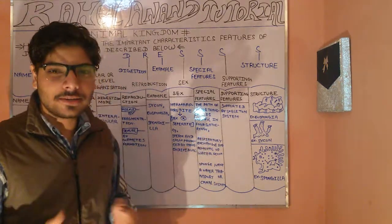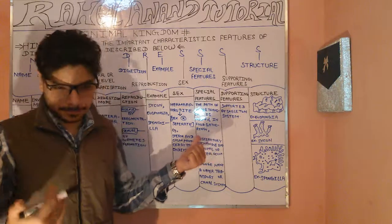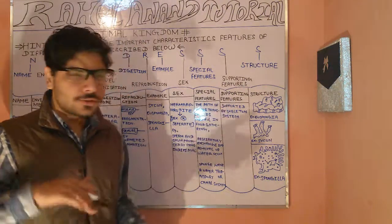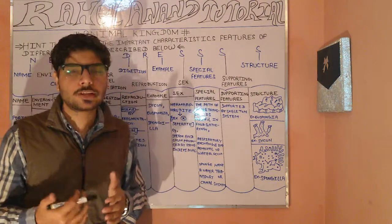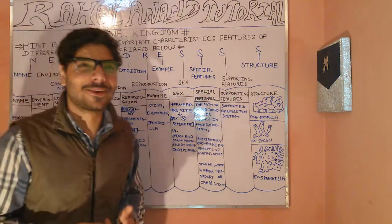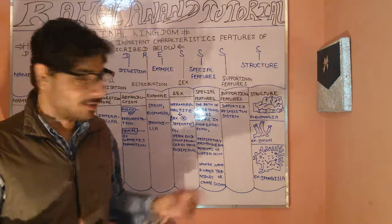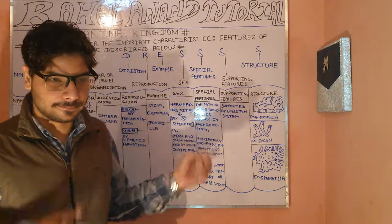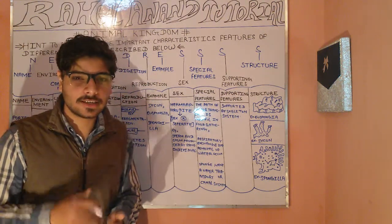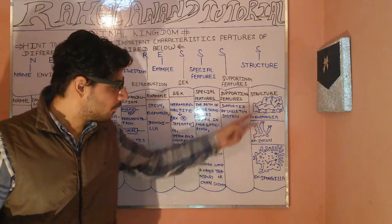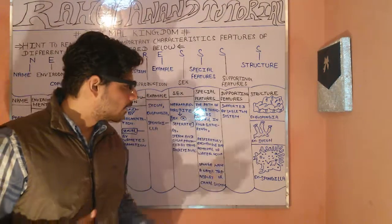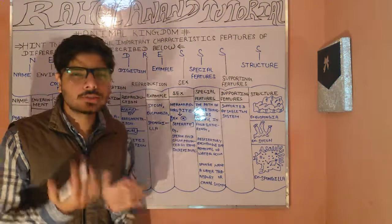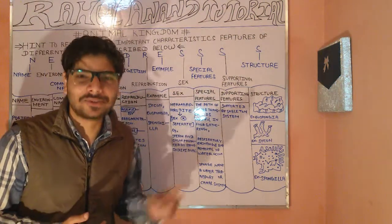Additionally, the supporting features include an endoskeleton — Porifera are supported by a skeleton system. Examples you can find include Euspongia, Sycon, and Spongilla. This covers the main aspects of Porifera demonstrated through the NICE and DRESS framework.